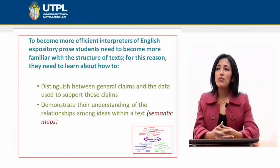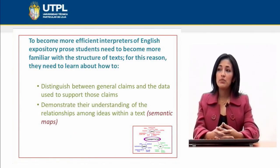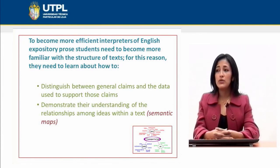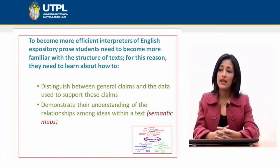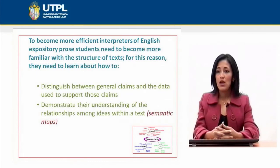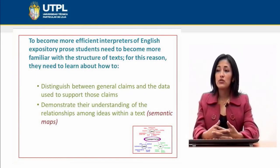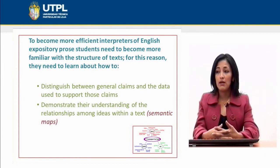To become more efficient interpreters of English expository prose, students need to become more familiar with the structure of text. For this reason they need to learn about how to distinguish between general claims and the data used to support those claims. Also, students have to demonstrate their understanding of the relationship among ideas within a text.